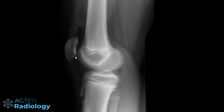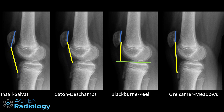On a radiograph, we can see the trochlear groove and the patella. If we have patella alta, the patella is higher up, increasing the risk of dislocations because it is more unstable and not really guided at the beginning of knee flexion, making it more susceptible to lateral dislocations. There are a variety of different measurements available to assess patella alta.